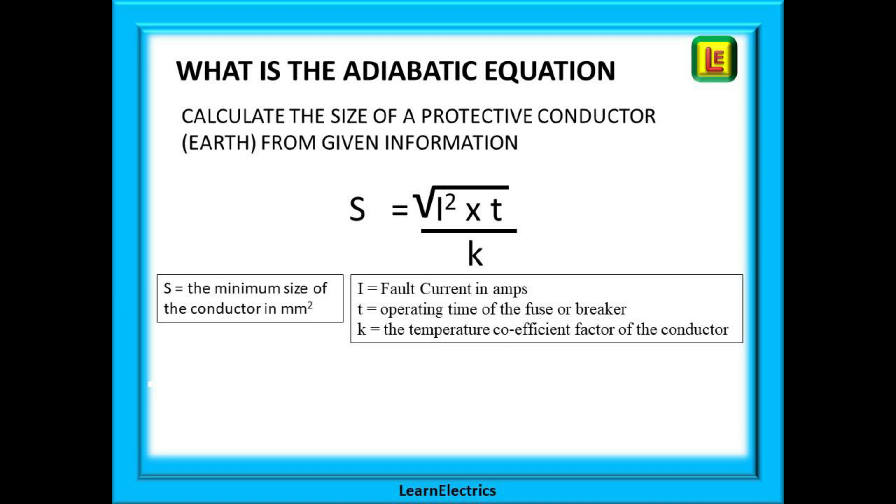It is very easy to interpret the formula. S is the size or cross sectional area of the conductor. This is what we want to know and this is found by inserting the other three parameters that are shown into the formula. We need to know the fault current, the operating time of the fuse or breaker and this thing called K, the cable factor.